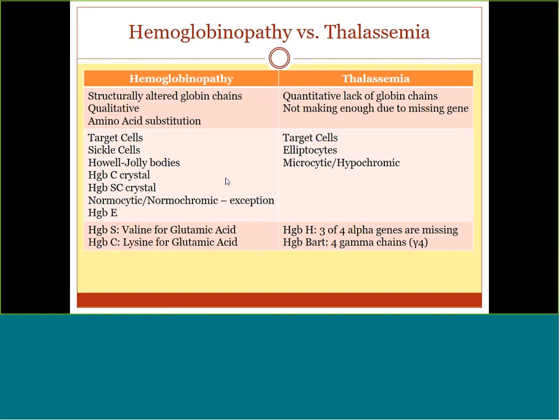A hemoglobinopathy occurs whenever there has been a switch in the amino acid sequence — a different amino acid substitutes the normal one, changing the entire hemoglobin molecule. Now we have a unique hemoglobin instead of A, A2, or F. It's what we call a qualitative change — the quality of the actual structure of the hemoglobin molecule has changed. There are greater than 800 hemoglobinopathies.